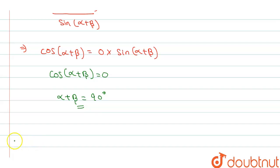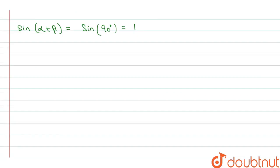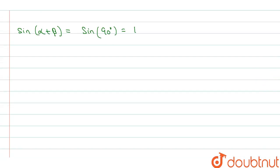Now we know that sin(α + β) = sin(90°) = 1. Now we have to find the value of sin(α + 2β).